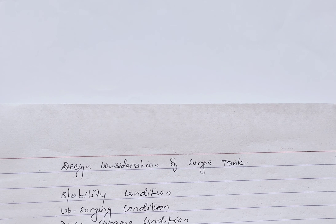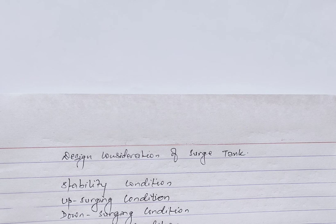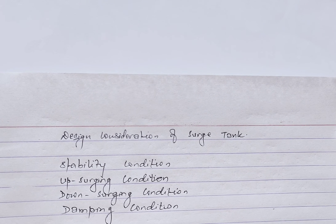The next is the upsurge condition: the top elevation of the source tank should be higher than the upsurge water level due to rapid interruption in full load. The third is the downsurge condition: the bottom elevation of the source tank should be lower than the downsurge level due to rapid load increases from half to full load rejection. In no case should air be drawn into the pipes.